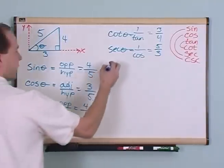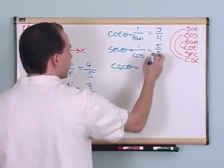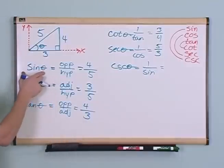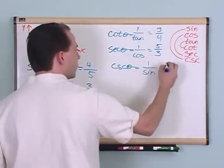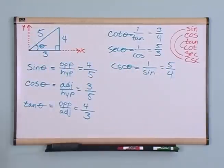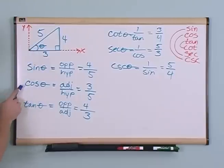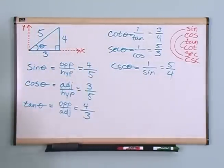And then cosecant, you follow this here, is one over sine. What did I find for sine? I found four-fifths. So one over four-fifths is just five-fourths, like that. So, you see, given the sides of this triangle, and knowing the definitions, I calculated sine of this angle theta, cosine theta, tangent theta, cotangent theta, secant theta, cosecant theta.